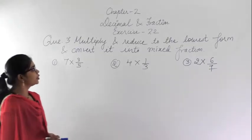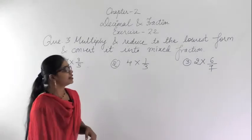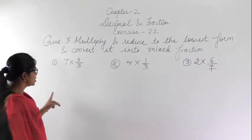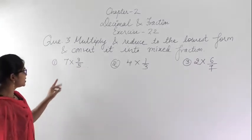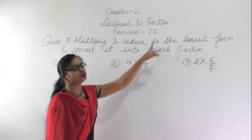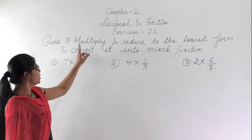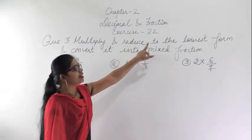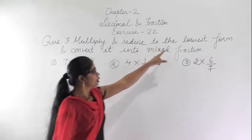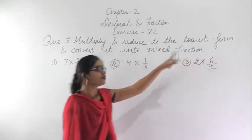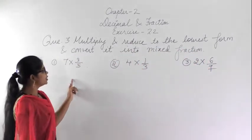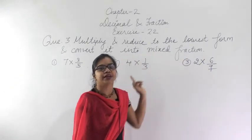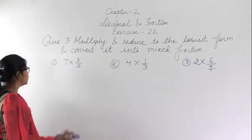Good morning. This is Chapter 2, Exercise 2.2, question 3. The question says: multiply and reduce to the lowest form. That means you first find out the product, then reduce it to the lowest form, and after that convert it into a mixed fraction. Let us start with the first question.